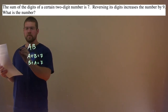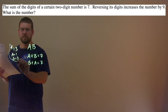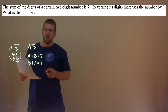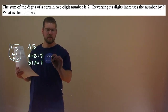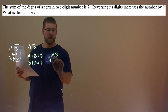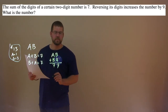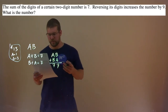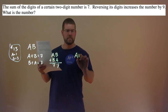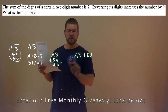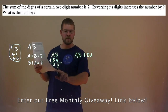Remember, A and B represent the digits. For example, it could be 13, where A equals 1 and B equals 3. Well, A plus B is 7, and B plus A is equal to 7. So the two-digit number A,B and the reversed number B,A — we know B plus A is 7 and A plus B is 7. So A,B plus B,A equals 77.